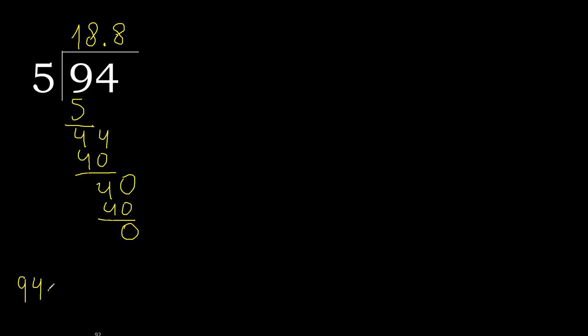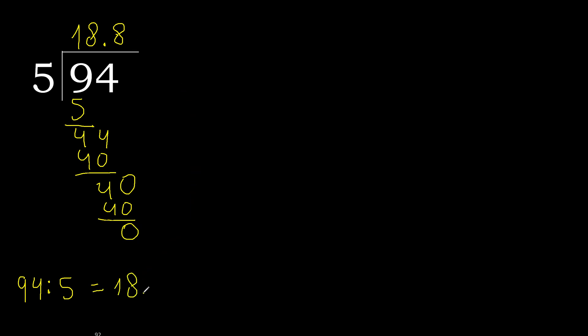94 divided by 5 is finished. The answer is 18 remainder 4. Thank you.